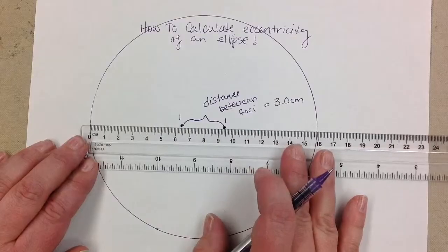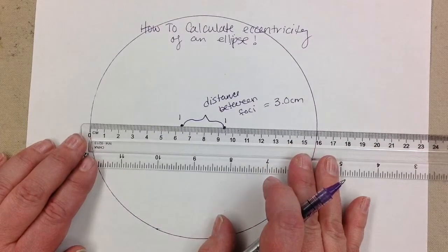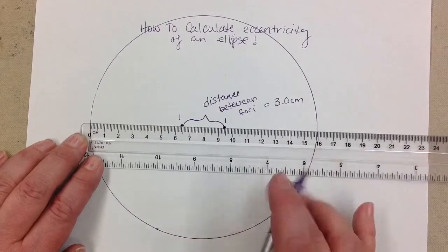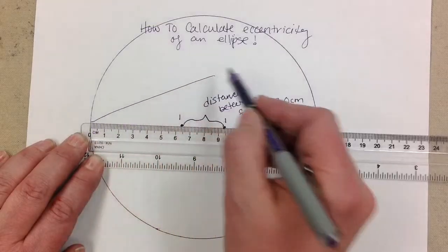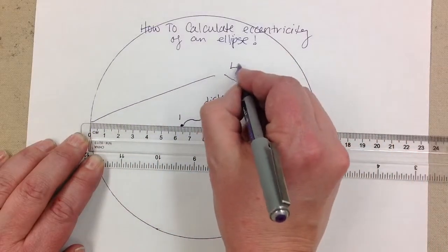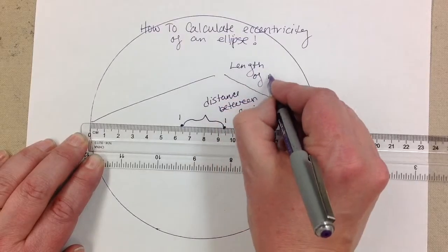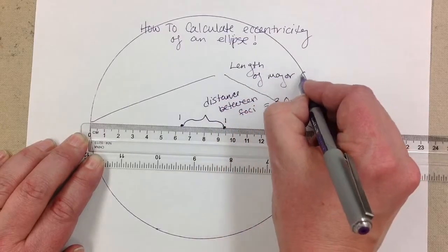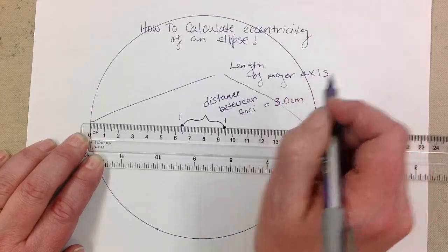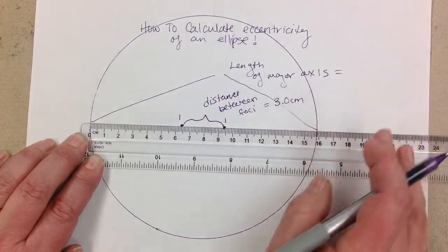And then I want to take the length of the major axis from one edge of the ellipse through the two foci to the other side. We need to know what that distance is. The distance between the foci is 3.0 centimeters, the length of the major axis is 15.8 centimeters.